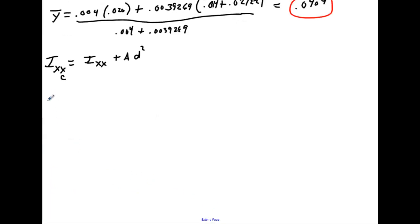Let's do Ixx centroid about the rectangle first. Its moment of inertia about its own centroid is 5.33 times 10 to the minus 7, plus its area .004. We're going to multiply it by its distance from its centroid squared, which is .0404 minus .02. That gives you the distance between the two centroids, and we're going to square that value.